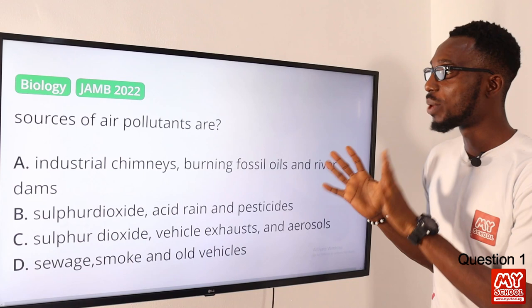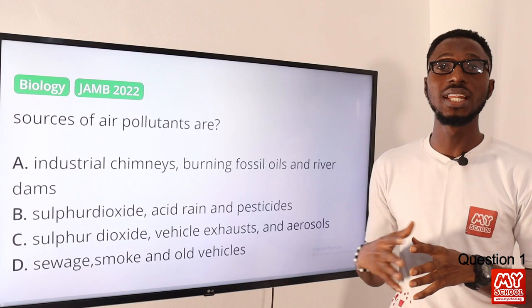Welcome back to the MySchool YouTube channel. In this video lesson, we are going to solve questions 1 to 21. Let's kick off with question number one: sources of air pollutants. When we talk about pollutants, we are looking at particles or substances that actually cause a shift in the normal structure of a particular environment.